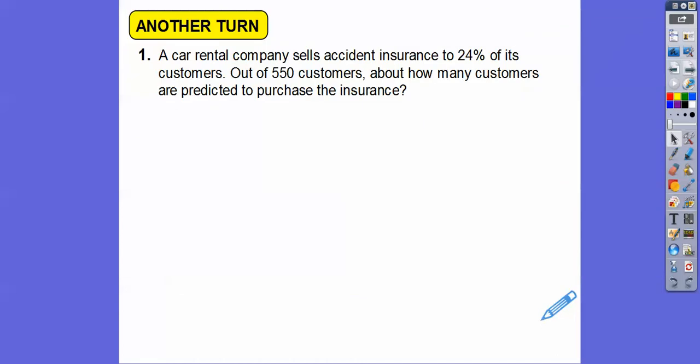Here's another one. A car rental company sells accidental insurance to 24% of its customers. Out of 550 customers, about how many customers are predicted to purchase the insurance. Your book actually does make a proportion. They go 24 over 100 because percent is per 100.